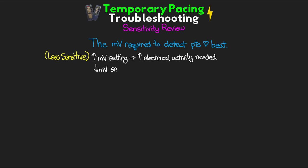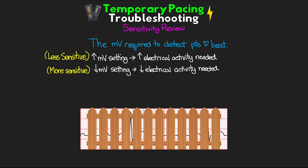On the flip side, the lower the millivolt setting, the less electrical activity it takes to be detected as a heartbeat — making the pacemaker more sensitive. It's helpful to think of this like a fence: the fence is our millivolt setting, and underneath is the patient's intrinsic heart rhythm. The higher you are on the paper, the greater the millivolt of electrical activity. The higher the fence, the less sensitive we are to the underlying activity; the lower the fence, the more sensitive we are.